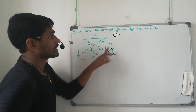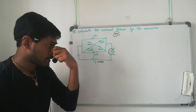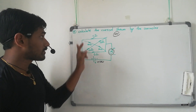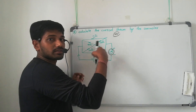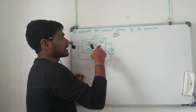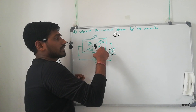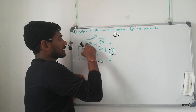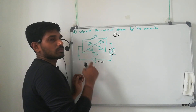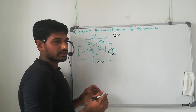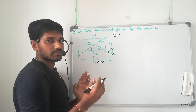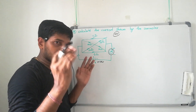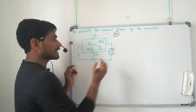We have to calculate the current in the ammeter, so first we have to calculate the R equivalent in the circuit. There are 10 ohm and 10 ohm resistors here and also 10 ohm and 10 ohm there. So a little bit of confusion will be there — this is somewhat complex — but it is very easy once you understand.